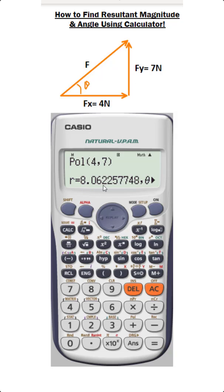So the magnitude of this force F is 8.062 and it is making 60.25 degrees with the horizontal. So this is how we can find the magnitude of a force F when its rectangular components are given using this pol polar coordinate function of this calculator.